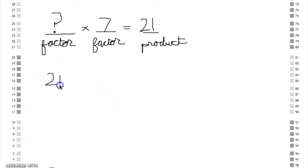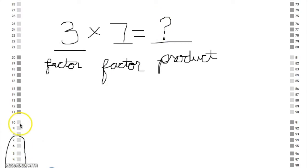If one of the factors is unknown, it can be found by dividing the product by the other factor. If the product is unknown, it can be found by multiplying the factors.